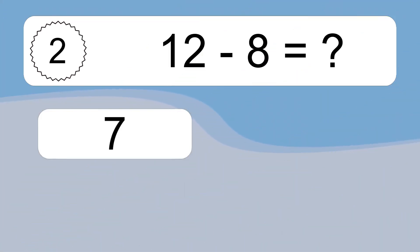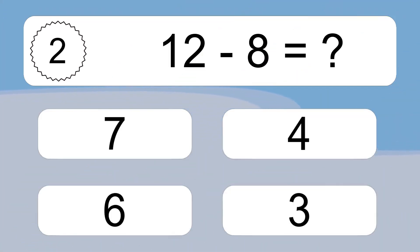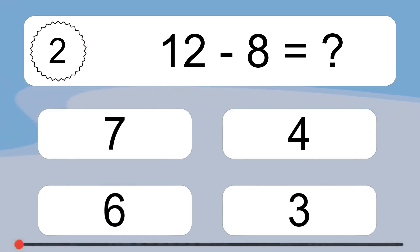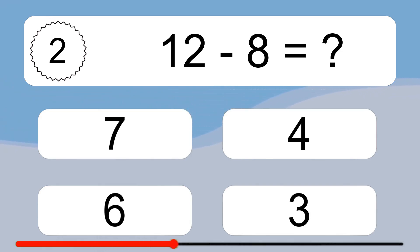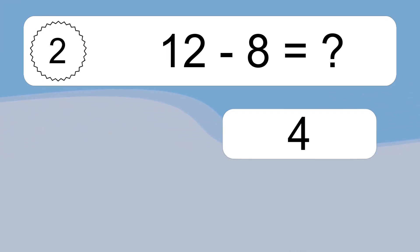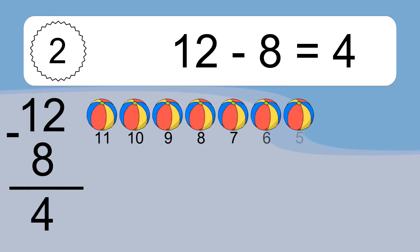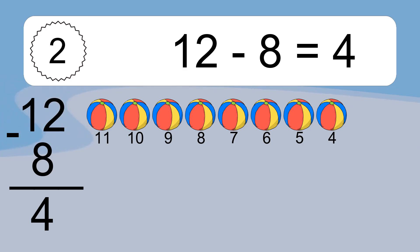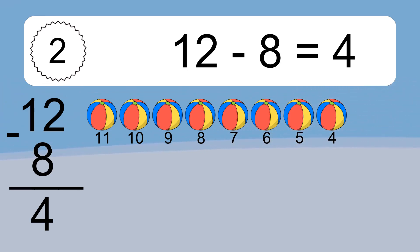12 minus 8 equals what? 12 minus 8 equals 4. Let's count it: 11, 10, 9, 8, 7, 6, 5, 4.